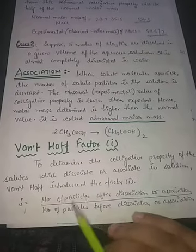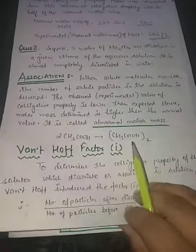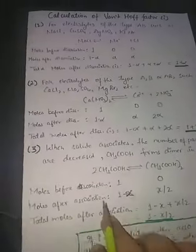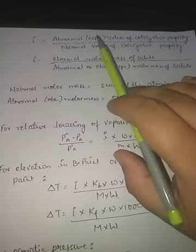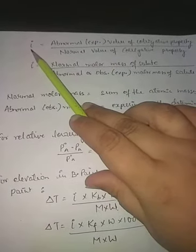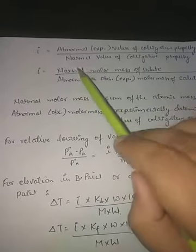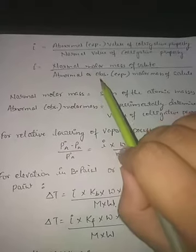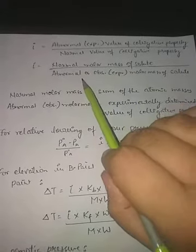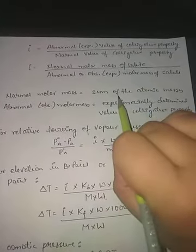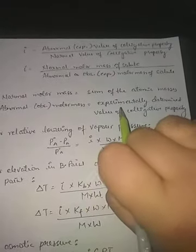There are three formulas to calculate the value of i, and which one to use depends on what is given in the question. If the abnormal or experimental value of colligative properties is given, we use the first formula. If molar masses are given, we find the value of i using: i = normal molar mass of solute upon abnormal or observed molar mass of solute. The normal molar mass is the sum of atomic masses, and the abnormal value is the experimentally determined one.